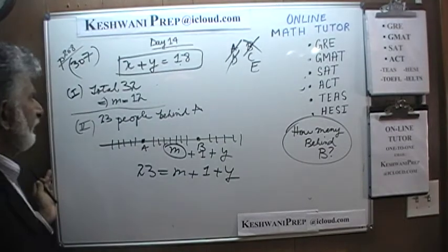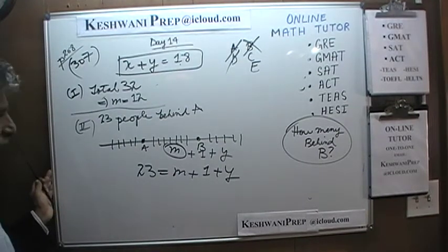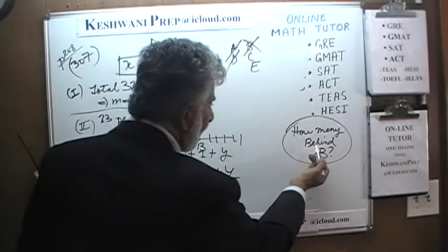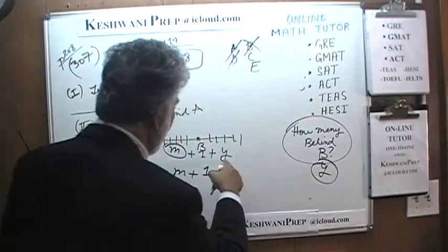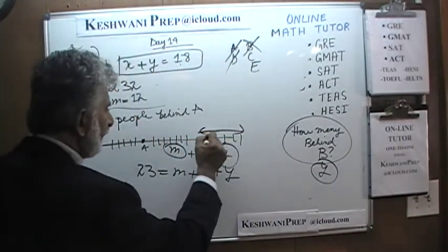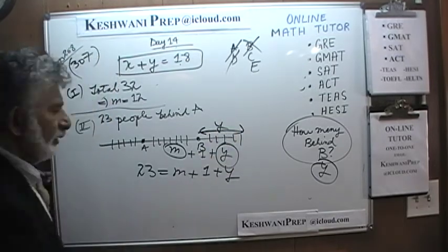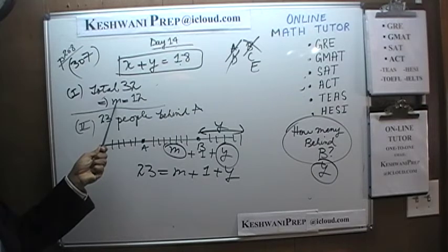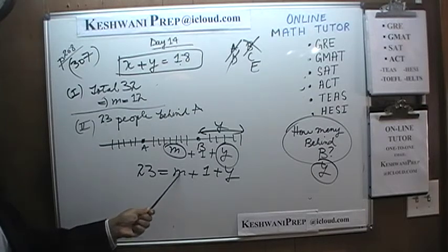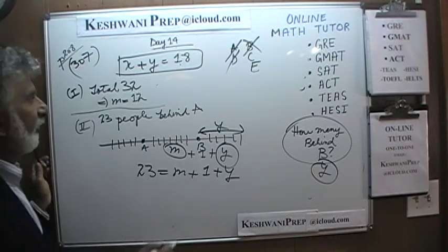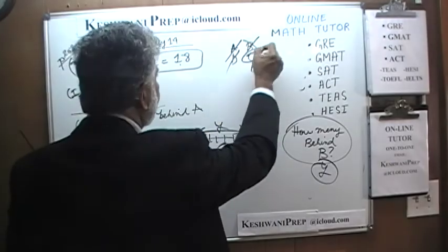But combining both statements: from the first we know m = 12. Substituting into the second-statement equation: 12 + 1 + y = 23, so y = 10. There are 10 people standing behind Beth. The answer is C.